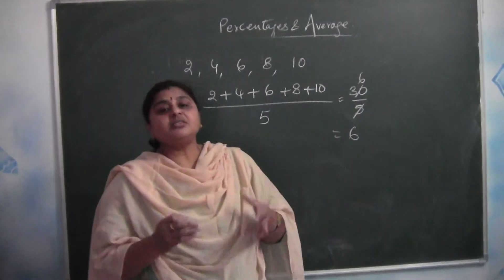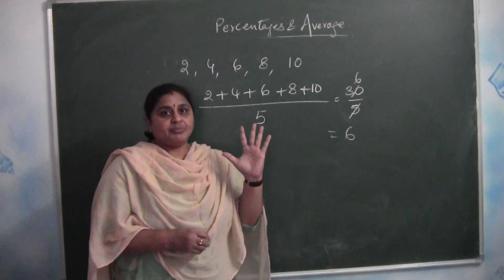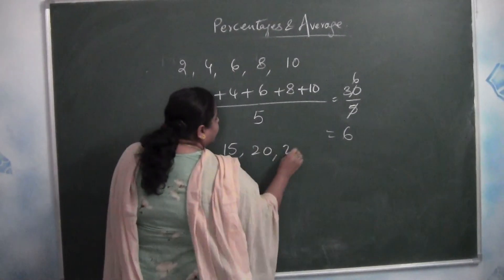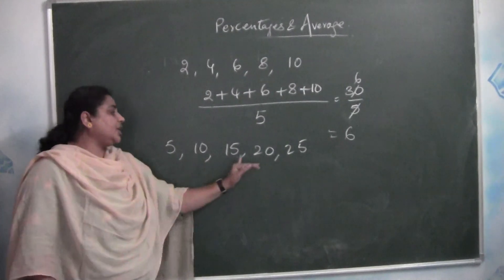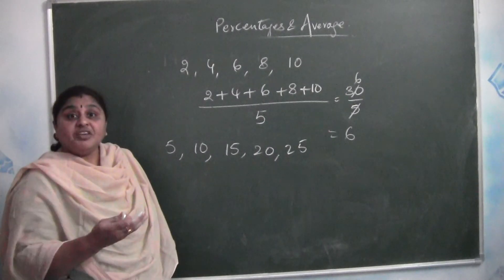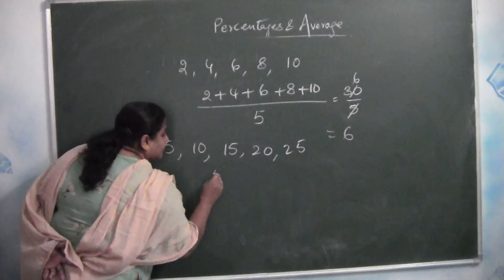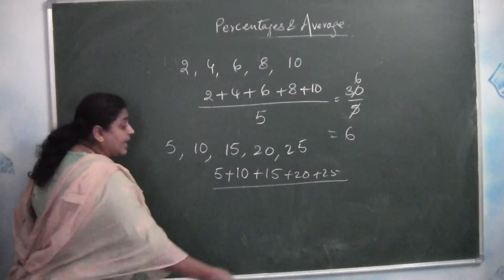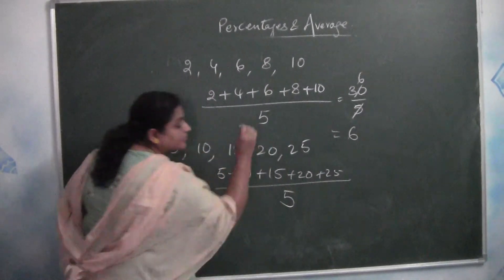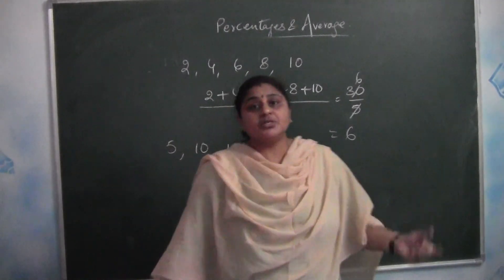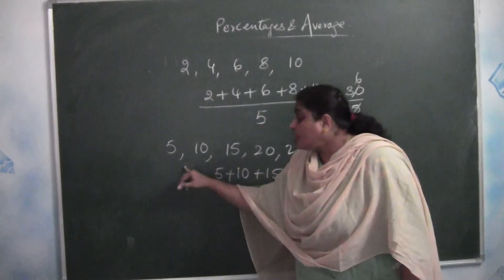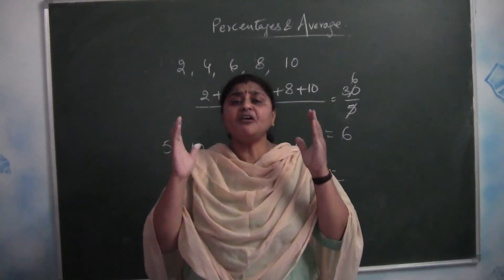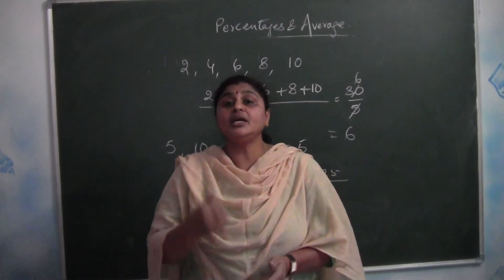Now let us take another example: the first 5 multiples of 5 (i.e., 5, 10, 15, 20, 25). Average is sum of values by number of values: 5 + 10 + 15 + 20 + 25 divided by 5. Add all 5 values and divide by 5 to get the average. Very simple — average is sum of all given values divided by the number of values.